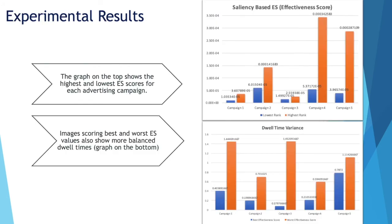Here are the result graphs. The top graph shows the highest and lowest ES scores for each advertising campaign. The graph below shows the dwell time variance corresponding to each campaign, from campaign one through five. What we notice is that the best scoring configuration in terms of ES value corresponds to the one with the lower dwell time variance, meaning a more equally distributed dwell time over each region. We observe the same behavior across the other four campaigns — two, three, four, and five — as visible in the graph in the bottom right corner of the slide.